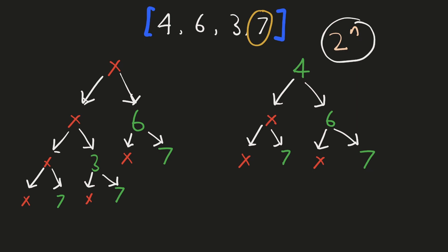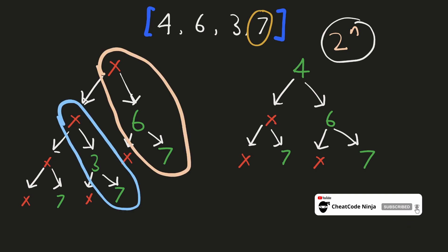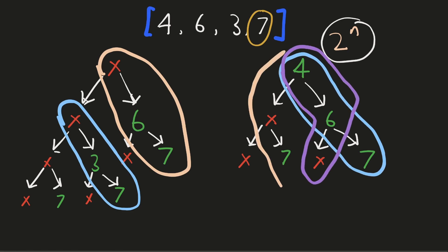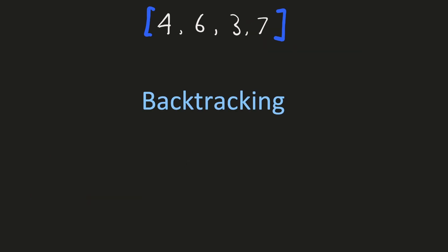And finally, for our last number 7, this will be the decision tree. Now we have formed all the different subsequences possible, but we only have to consider those which have at least two elements. So for the left decision tree where we chose to ignore 4 as the starting of the subsequence, these will be the valid subsequences with length at least 2. And similarly, these would be the 3 subsequences when we decide to begin with 4. Since the constraints of this problem state that we cannot have more than 15 elements in the array, the total number of subsequences will not be that high and we can brute force our solution.